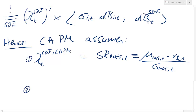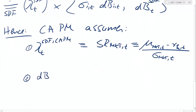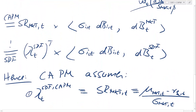The second assumption comes directly from the derivation: the innovation to the SDF in the CAPM is specialized to be just the innovation in the return of the market portfolio. This is the intuition we know — in the CAPM, the investor is afraid of fluctuations in the market portfolio, which is the source of systematic risk, and the compensation for that type of risk is given by the Sharpe ratio.